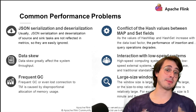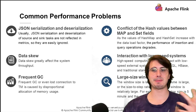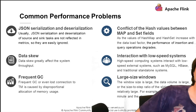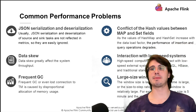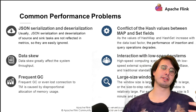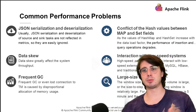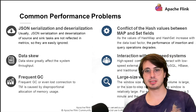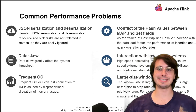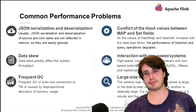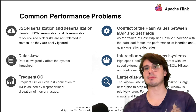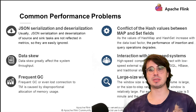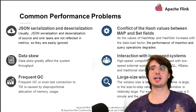Memory management issues will typically manifest as out-of-memory errors or excessive garbage collection, and often stem from incorrect memory configuration, memory leaks in user code, or inappropriate state backend selection. Diagnose memory issues using heap dumps and GC logs. Solutions include adjusting memory configuration ratios, fixing memory leaks, switching to RocksDB for larger state, or implementing state cleanup strategies.